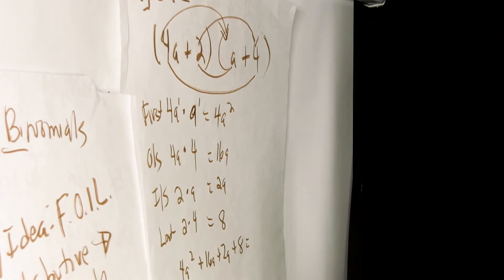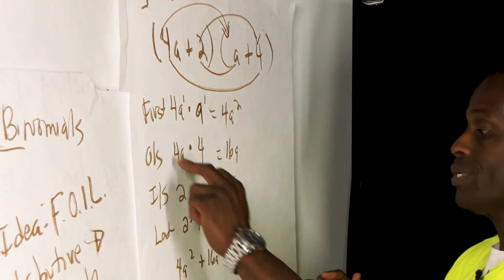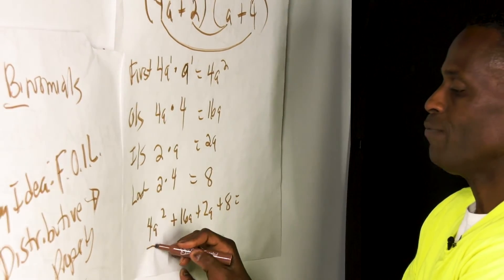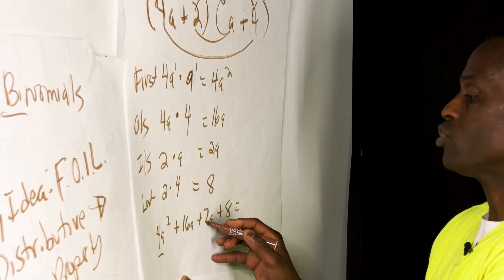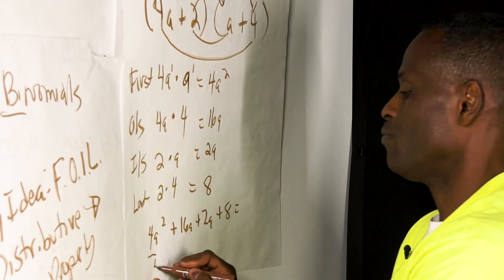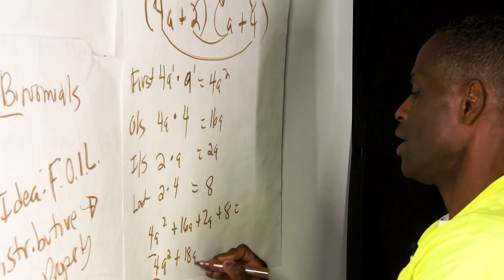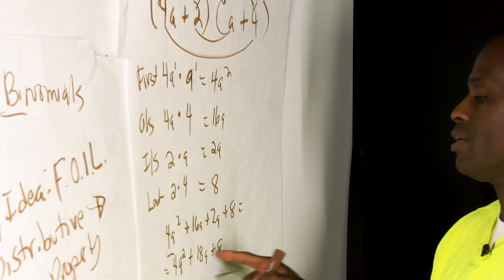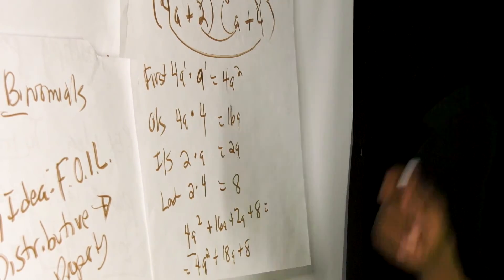And now when we write this out we'll write it out as 4a squared plus 16a plus 2a plus 8. Are we finished? Are we finished class? No we're not because we have like terms. Remember we're simplifying. So when we're simplifying we want to make sure we combine everything that's alike. So we have 4a squared there. Nothing's like that. But we have 16a plus 2a which gives us 4a squared plus 18a plus 8. That's the constant. And there is our simplified answer: 4a squared plus 18a plus 8 using the FOIL technique.